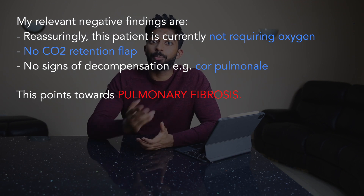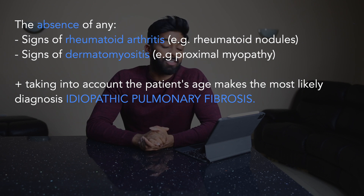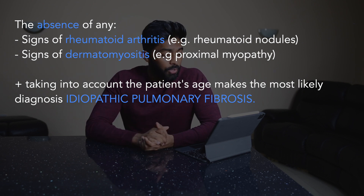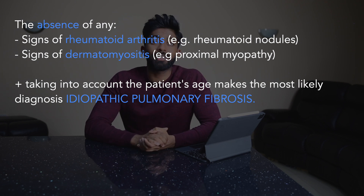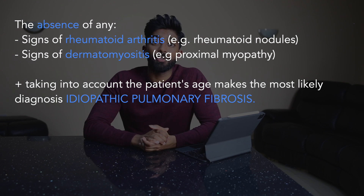But to really impress your examiners, you can add a bit more. The absence of any signs of rheumatoid arthritis such as rheumatoid nodules, any signs of dermatomyositis such as proximal myopathy, plus taking into account the patient's age, make the most likely diagnosis idiopathic pulmonary fibrosis. That extra bit shows you've thought about possible causes and looked for clues to help narrow down your differential.